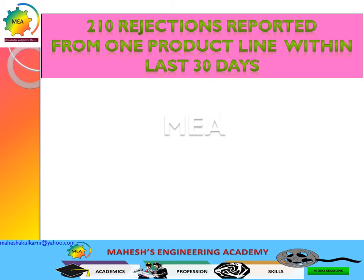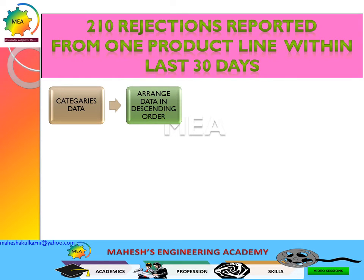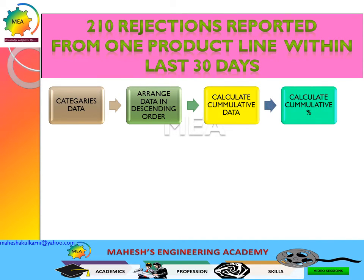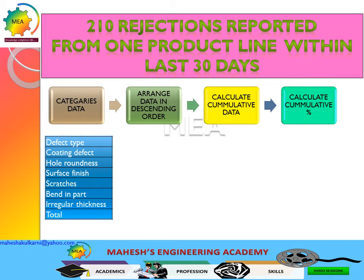There are 210 rejections. How do you know which are the causes for those rejections and how are you going to solve that problem? Let's look at step-by-step solutions. The first step is to categorize those problems into groups of similar nature, arrange data in descending order, calculate the cumulative data, and calculate the cumulative percentage. Out of 210 rejections, these are the defect types: coating defect, hole roundness, surface finish, scratches, bend in part, and irregular thickness.